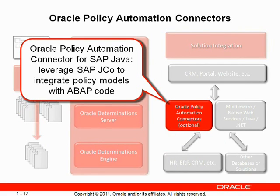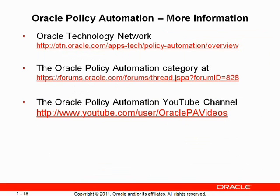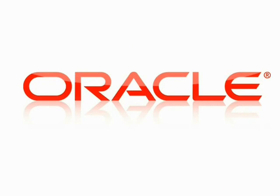The OPA Connector for SAP Java leverages SAP JCO to integrate policy models with ABAP code in SAP. Thank you for viewing this segment of the Oracle Policy Automation Briefs. For additional information on Oracle Policy Automation, please check out the Oracle Technology Network at otn.oracle.com, the Oracle Policy Automation category on forums.oracle.com, and additional videos that are available.